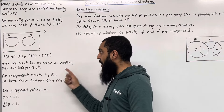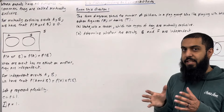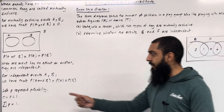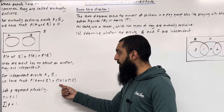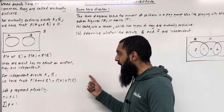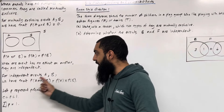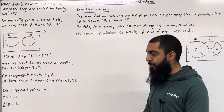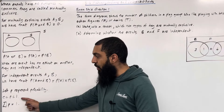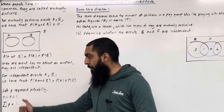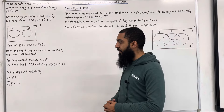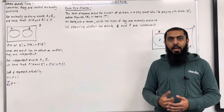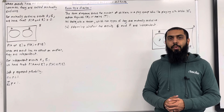When one event has no effect on another, we call these events independent. For independent events A and B, we have that the probability of A and B is equal to the probability of A multiplied by the probability of B. This is the test for independent events. Let P represent probability. We know that P is greater than or equal to 0 but less than or equal to 1, and that the total of all probabilities is equal to 1. These are the key facts of 5.3 Mutually Exclusive and Independent Events, which I will implement in two exam style questions.